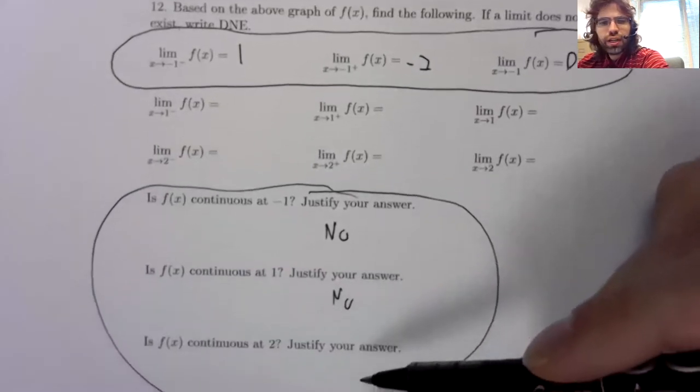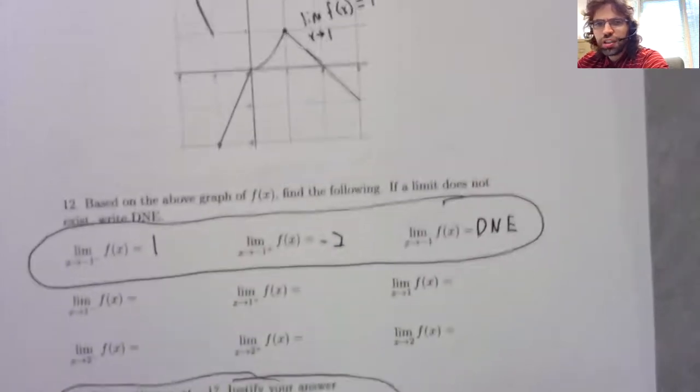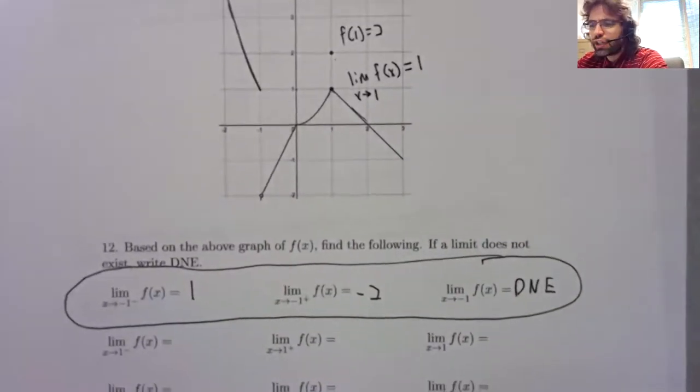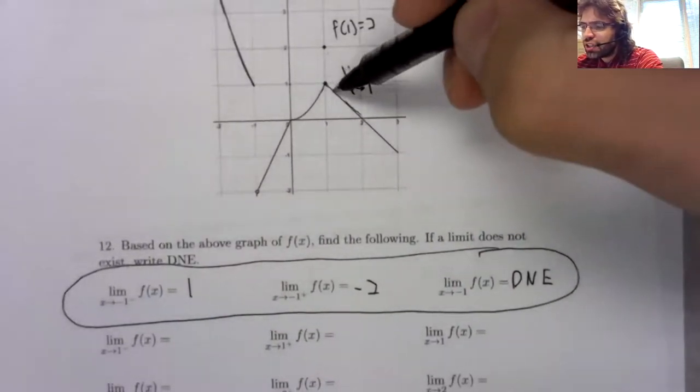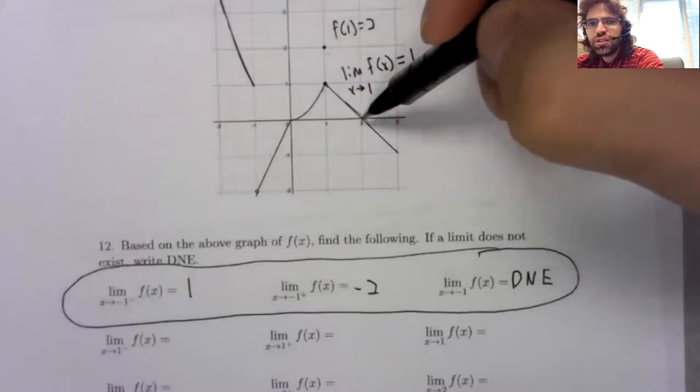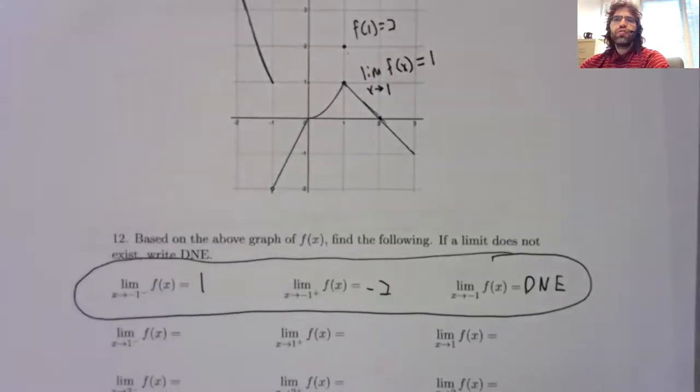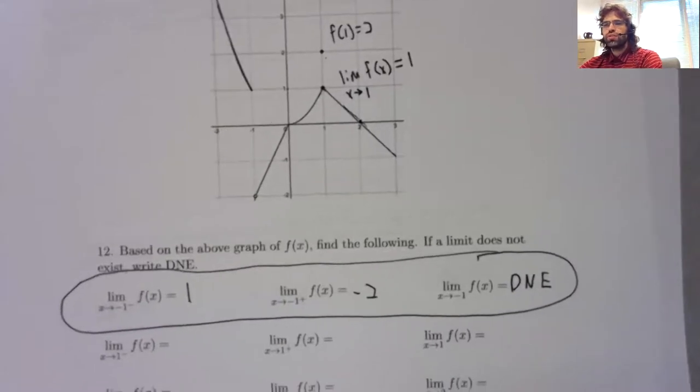On the other hand at two, nothing like that is occurring. Left hand limit is zero. The right hand limit is zero. f of two is zero. So f of two equals the limit.